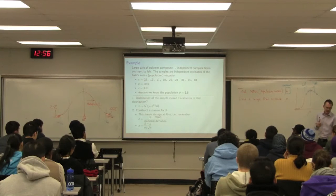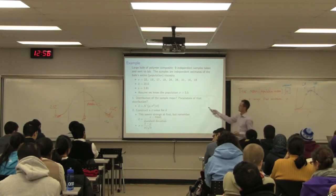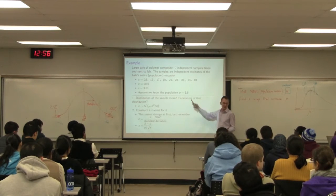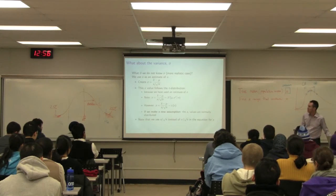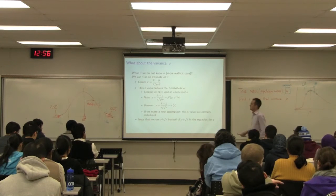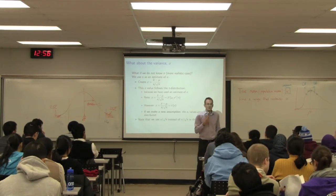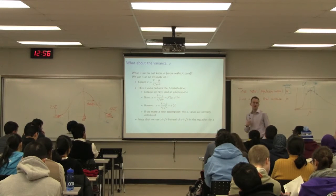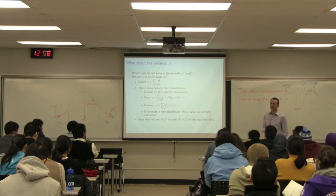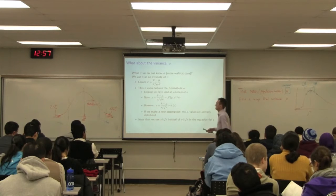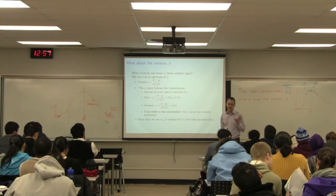Notice the sample standard deviation is 3.81, not the population sigma of 3.5 — so it's pretty close but not the population value. I substitute 3.8 instead of 3.5. But once z doesn't use sigma, it no longer follows the normal distribution. If I know sigma, z comes from the normal distribution. If I don't know sigma, z does not come from the normal distribution.